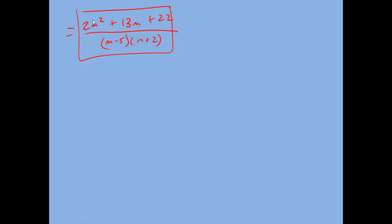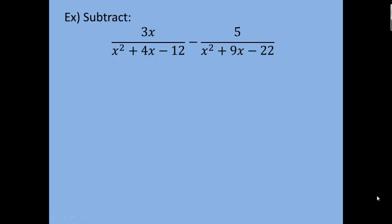Let's take a look at another example. For this next one, we have to subtract 3x over (x² + 4x − 12) minus 5 over (x² + 9x − 22).